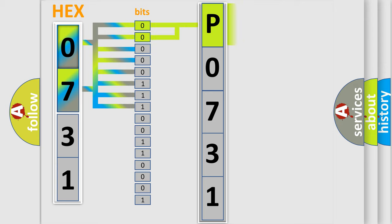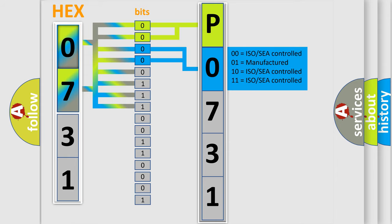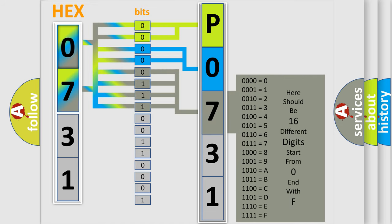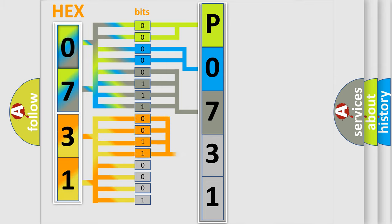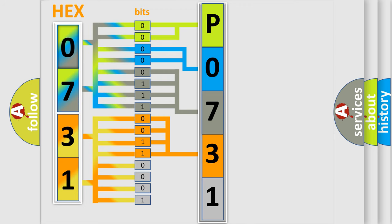By combining the first two bits, the basic character of the error code is expressed. The next two bits determine the second character. The last four bits of the first byte define the third character of the code. The second byte is composed of a combination of eight bits — the first four bits determine the fourth character, and the last four bits define the fifth character. A single byte conceals 256 possible combinations.